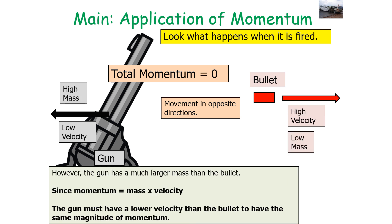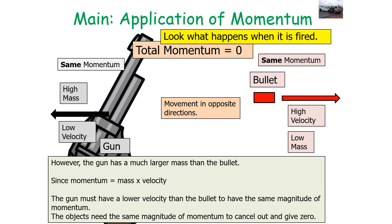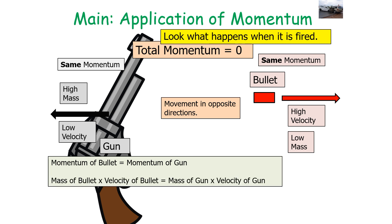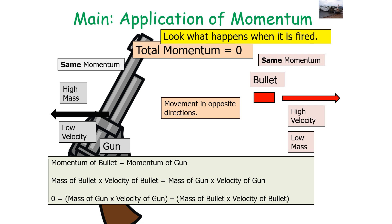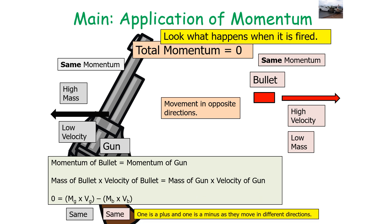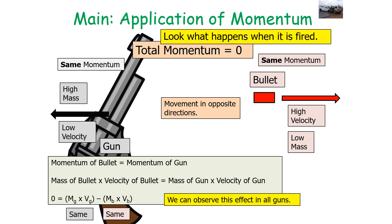The gun has a much larger mass than the bullet, and since momentum is mass times velocity, the gun must have a lower velocity than the bullet to have the same magnitude of momentum. The objects need the same magnitude of momentum to cancel out and give zero. So: mass of bullet × velocity of bullet = mass of gun × velocity of gun. One of these values must be negative because they move in opposite directions. We observe this effect in all guns and all explosions.